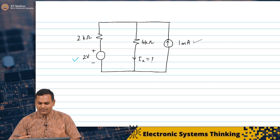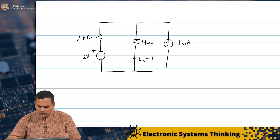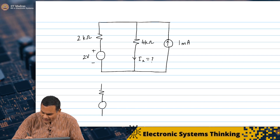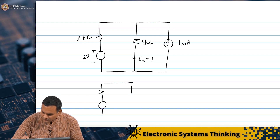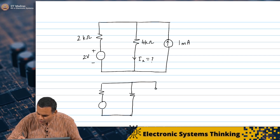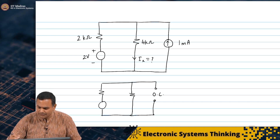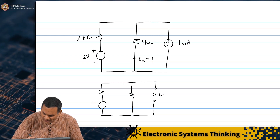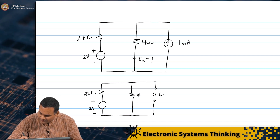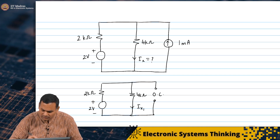Let us do it systematically. I am going to take this voltage source first, splitting this as 2 sources. First, I am going to de-energize the 1 milliamp current source. When you de-energize a current source, you open-circuit it. I am going to energize only the voltage source. I have 2 kilo ohms and the 4 kilo ohm resistor. I am going to call this current IX1 — this is case 1.